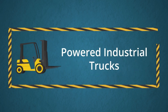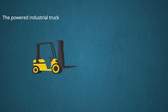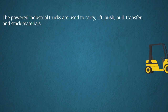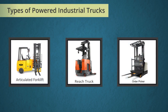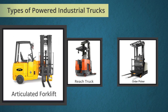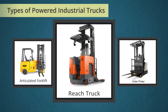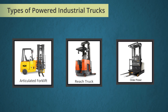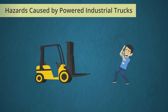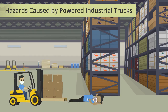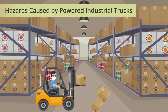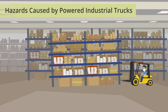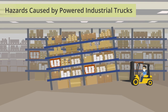Let us start with powered industrial trucks. Powered industrial trucks are used to carry, lift, push, pull, transfer, and stack materials. The types include articulated forklift, reach truck, and order picker. Hazards caused by powered industrial trucks include equipment hitting a person, fall of material from height, collision of two equipment, rack collapse due to a hit, and tip over.